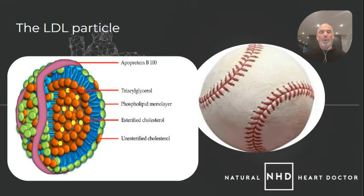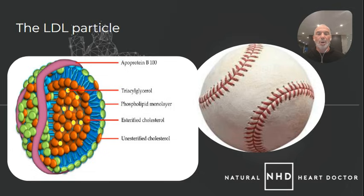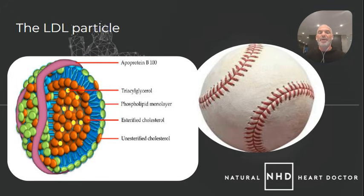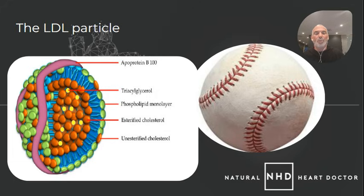So this is the LDL particle, and the LDL particle is the bus that carries passengers around the body. If we also think about LDL as like a baseball, the stitching on the baseball is called ApoB, which is short for Apolipoprotein B100. It is a very important molecule, just like the stitching of a baseball is very important — that's what helps keep it together. There are a lot of different components to an LDL and to a baseball, and they are all very important; one cannot function without the other.